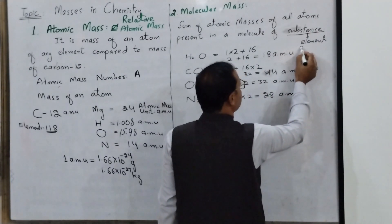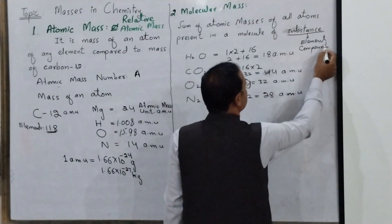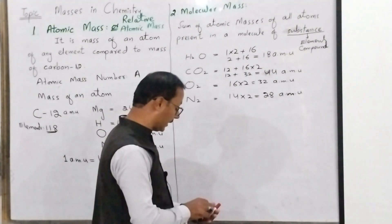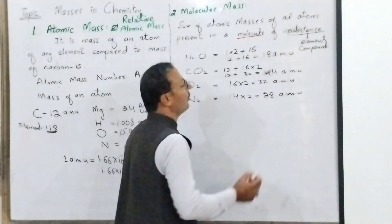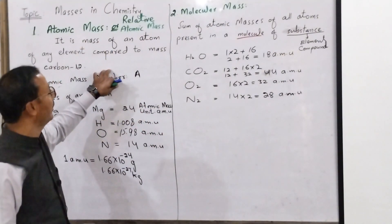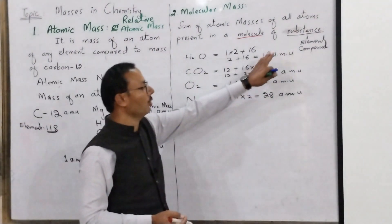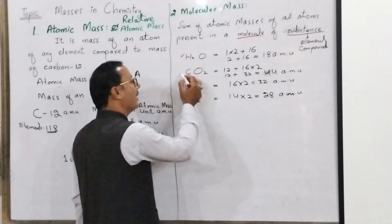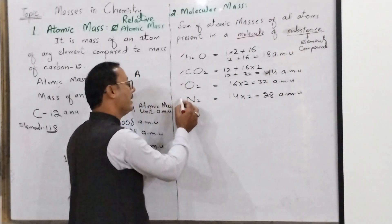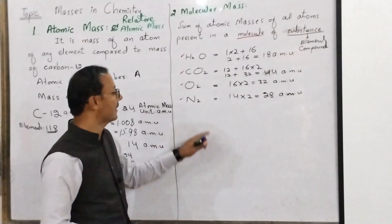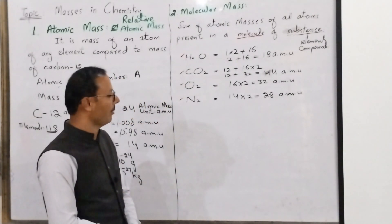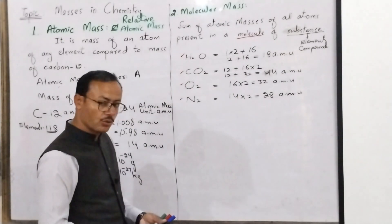Substance includes element and compound. When you have a substance, you have elements and compounds — this means molecules. For elements and compounds we have molecular mass. Water and carbon dioxide are compounds and their mass is called molecular mass. Oxygen and nitrogen are elements but they exist in molecular form, so their mass is also called molecular mass.